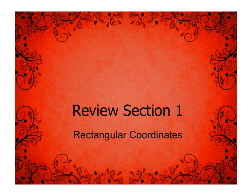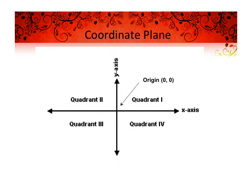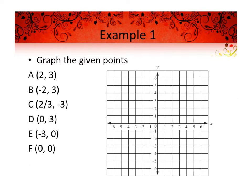This section is called rectangular coordinates, and it starts with probably one of the most basic things: the coordinate plane, also called a Cartesian plane — they're the same thing. The x-axis is horizontal, the y-axis is vertical, and where they meet is called the origin. The quadrants start in the top right corner and work counterclockwise: quadrant one is top right, quadrant two is to the left, three is underneath, and four wraps all the way back around.